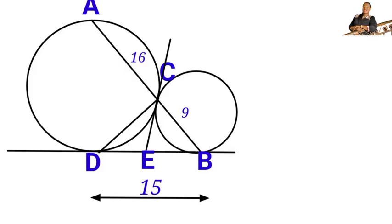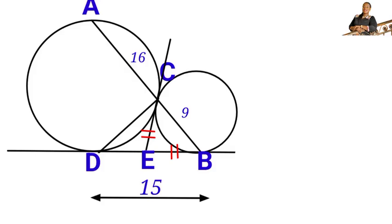We will prove that the angle at point C is a right angle using the two-tangent theorem, which states that two tangents drawn from an external point to a circle have equal length. From point E to the smaller circle, tangents EB and EC are equal. From point E to the bigger circle, tangents ED and EC are equal. So these line segments are respectively equal.